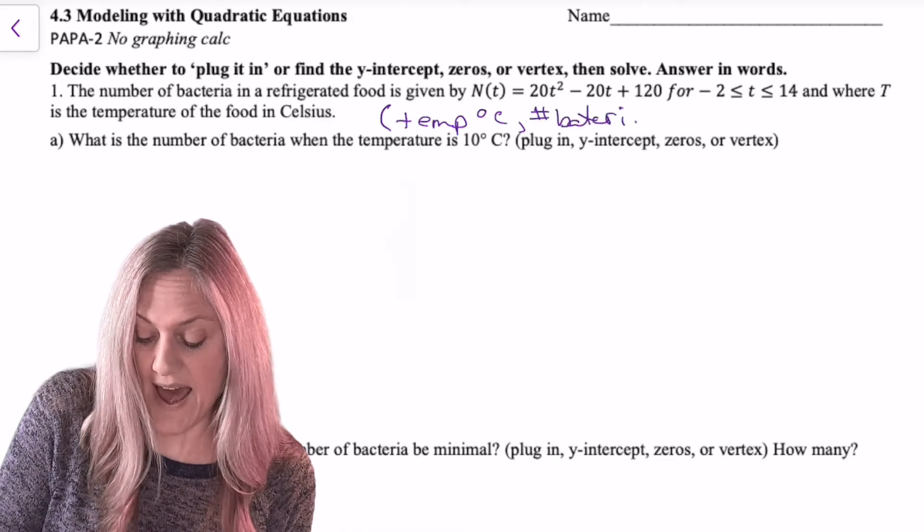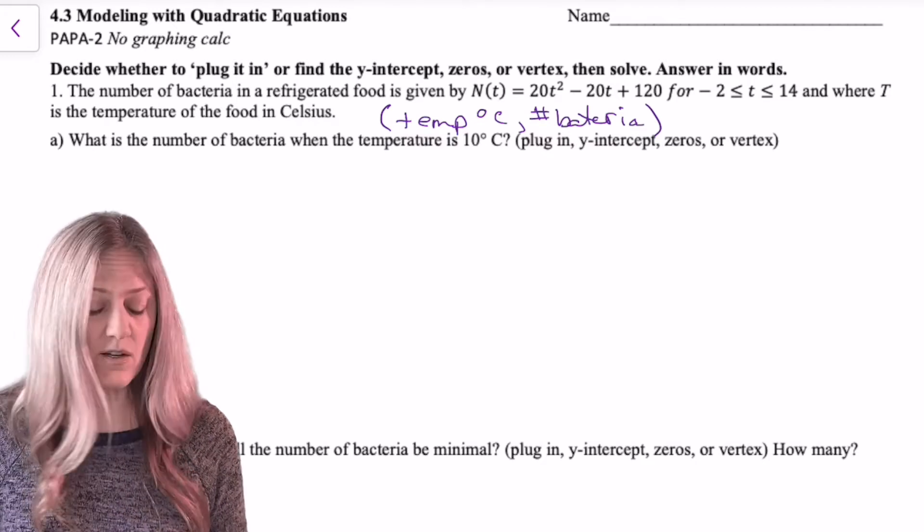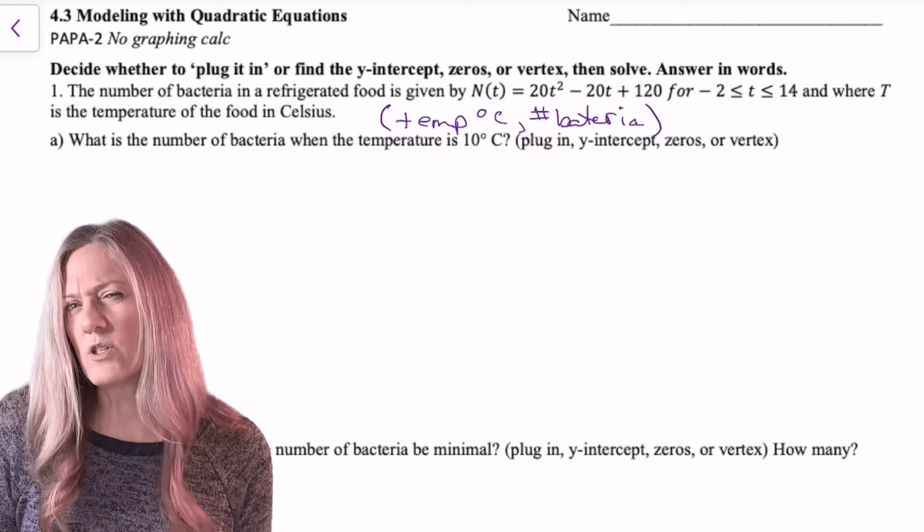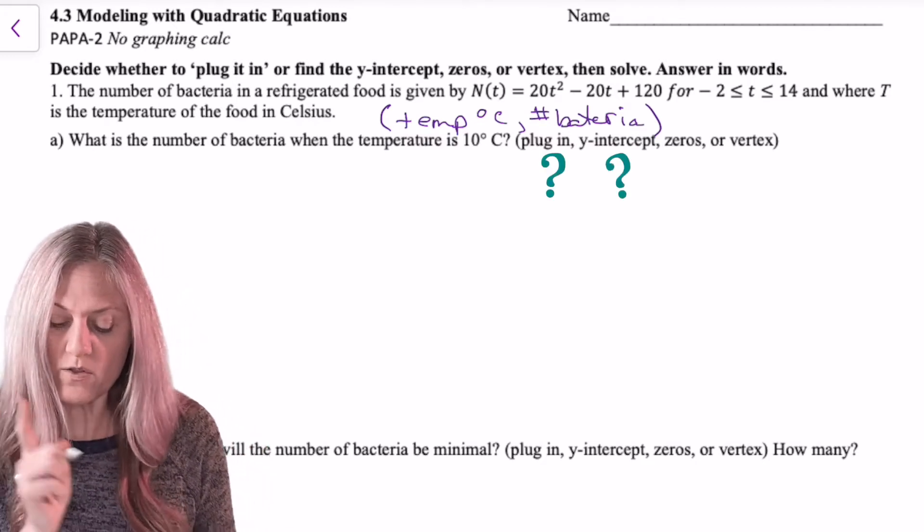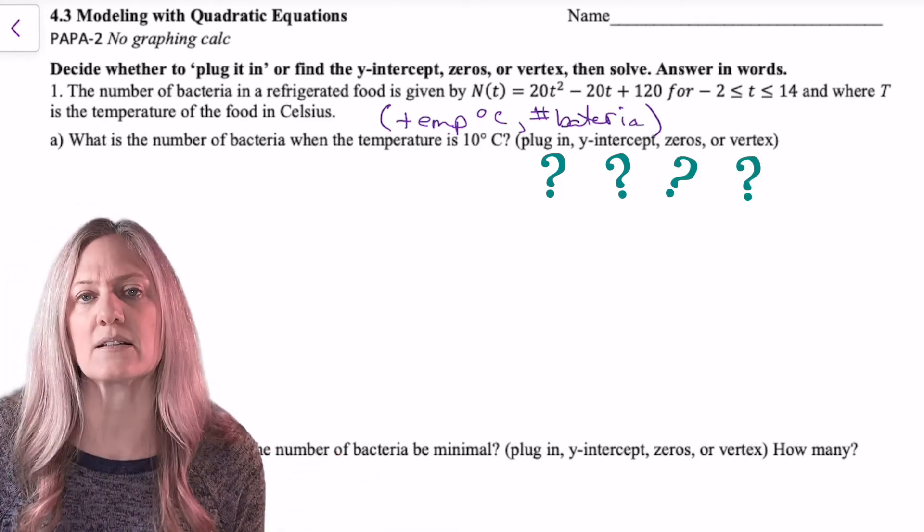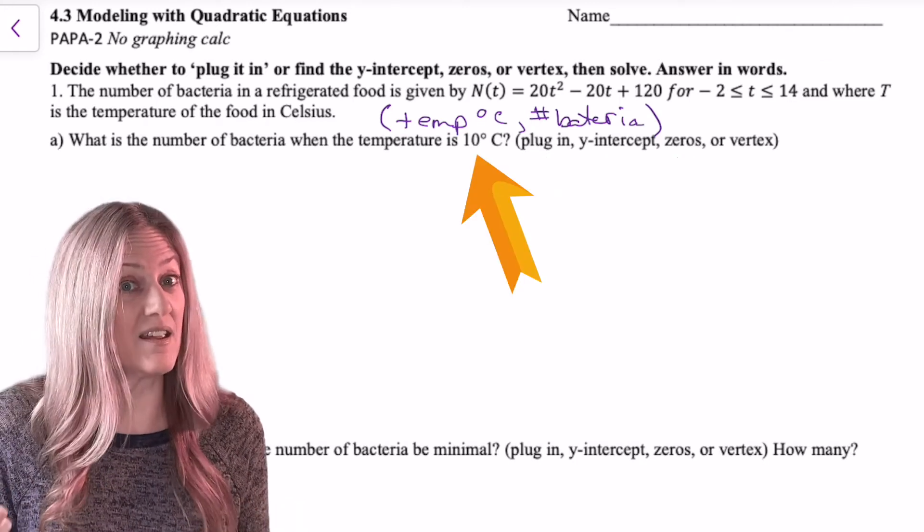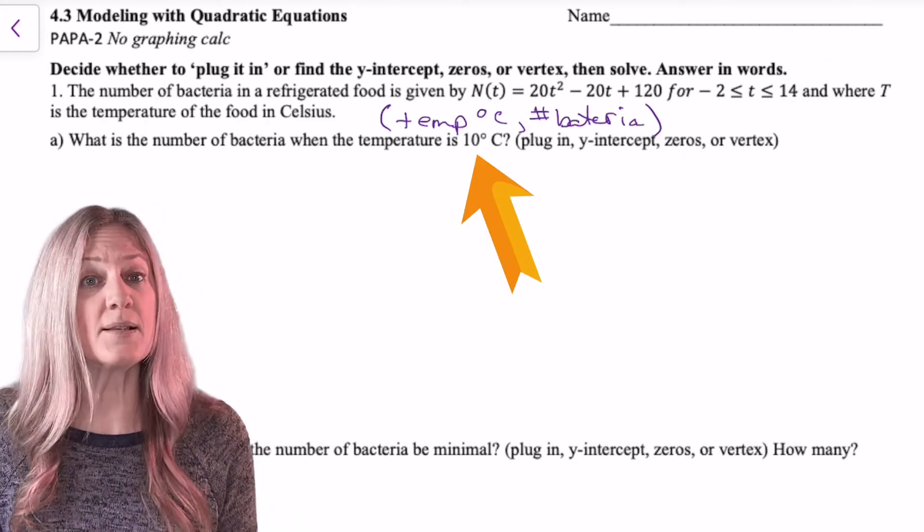Let's first think about the input and output. Our input would be the temp measured in degrees Celsius, and our output is going to be the number of bacteria. The first question asks, what is the number of bacteria when the temperature is 10 degrees Celsius? So should we plug in, use the y-intercept, find the zeros, or do we need the vertex? Well, they're giving me an input of 10, so all I have to do is plug in.